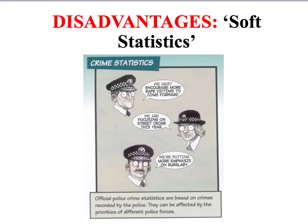Even though official statistics are often an invaluable source of data for sociologists, there are certain types that need to be treated with a degree of caution. These are what we might call soft statistics, which refer to phenomena that are much more difficult to measure and define in a clear-cut way. For example, police crime statistics only measure the amount of crimes reported to and recorded by the police, which represents just a small minority of the total amount of crime committed within the UK.